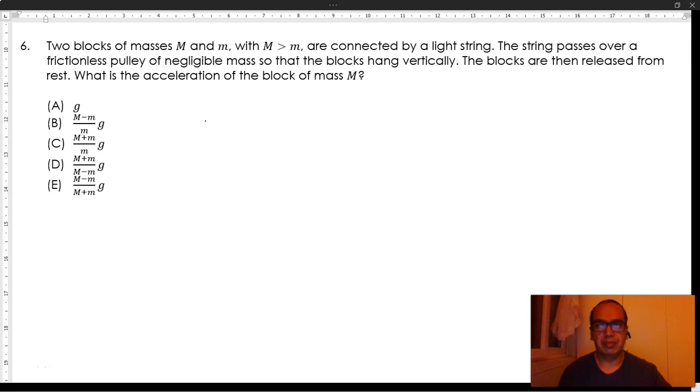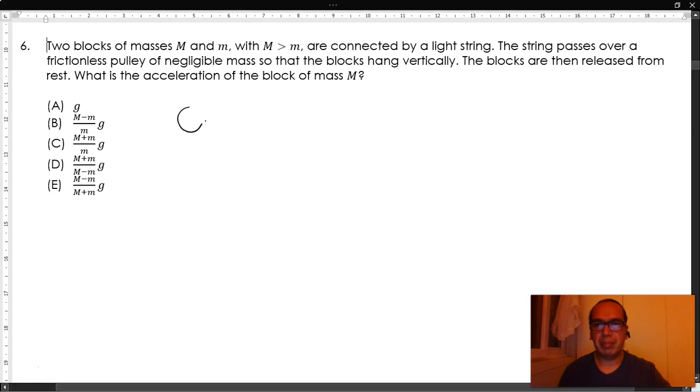Number six: Two blocks of masses M and m, with M greater than m, are connected by a light string. The string passes over a frictionless pulley of negligible mass so that the blocks hang vertically. The blocks are then released from rest. What is the acceleration of the block of mass capital M?